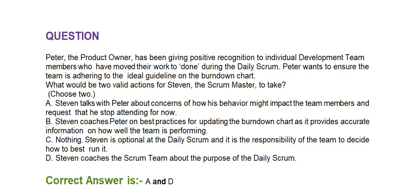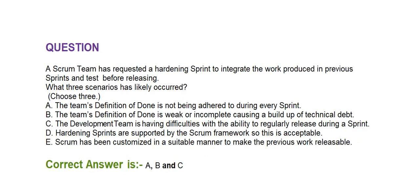Option B: Steven coaches Peter on best practices for updating the burn down chart, as it provides accurate information on how well the team is performing. Option C: nothing — Steven is optional at the daily scrum and it is the responsibility of the team to decide how to best run it. Option D: Steven coaches the Scrum team about the purpose of the daily scrum. Correct answer is Option A and Option D — Steven talks with Peter about concerns of how this behavior might impact the team and requests he stop attending, and Steven coaches the Scrum team about the purpose of the daily scrum.